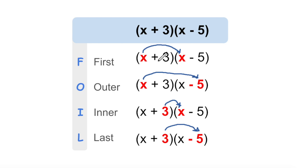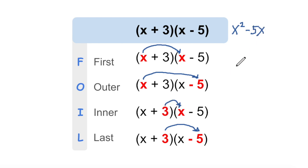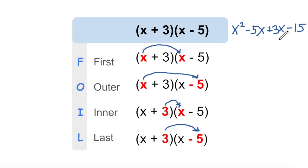So when we multiply these out, we get x squared for the first one. Then the outer gives us negative 5x. And then the inner term gives us 3x. And the last gives us 3 times negative 5, which is negative 15. After we multiply these out and have applied FOIL, we usually are going to have to combine like terms.